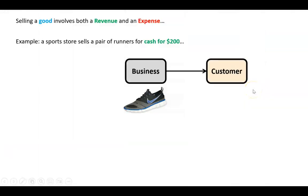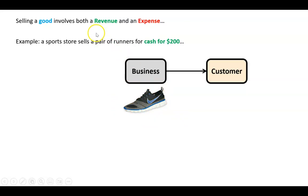That was providing a service, which is Year 11 accounting. In Year 12 we deal with selling a physical good — like a pair of shoes or a video game — and that involves both a revenue and an expense. Let's take a basic example: a sports store.